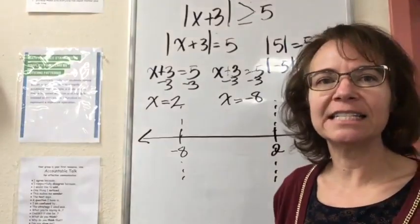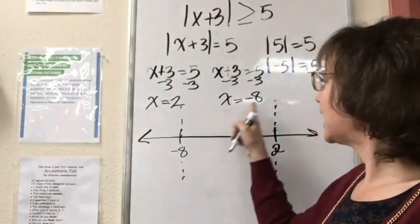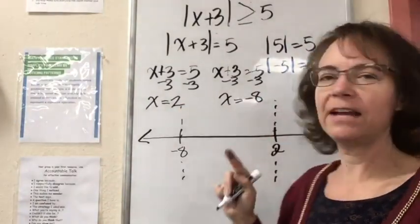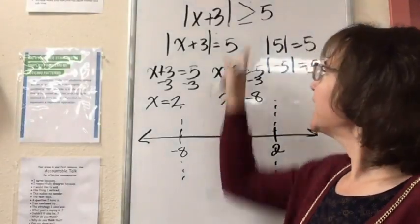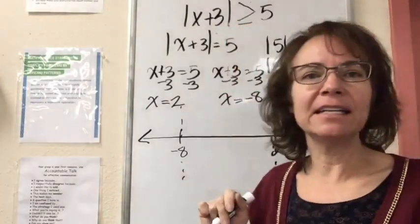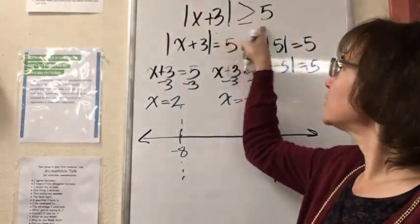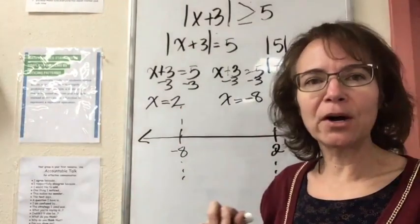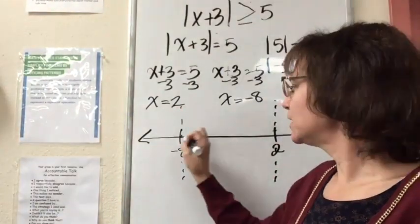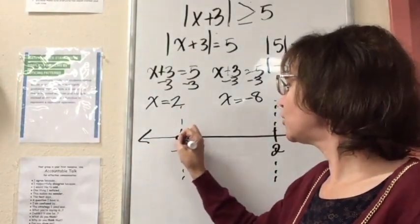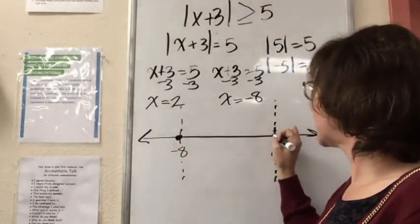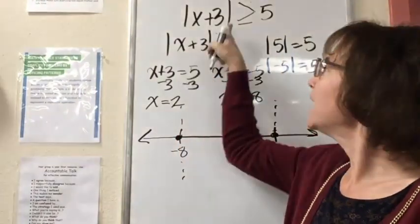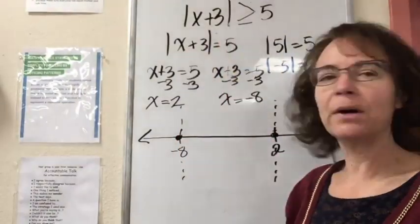Now I want to check to see if the actual solutions — x equals 2 and x equals negative 8 — are part of the solution. I check back in the inequality. Because this has an 'or equal to,' both 2 and negative 8 are part of the solution, so I can put a solid dot here. These make the equation true.